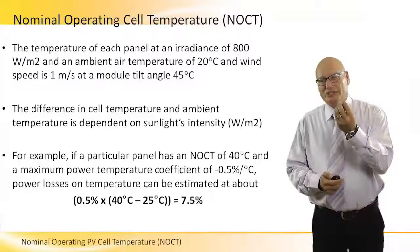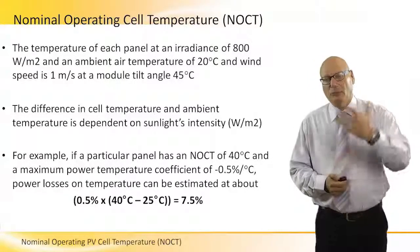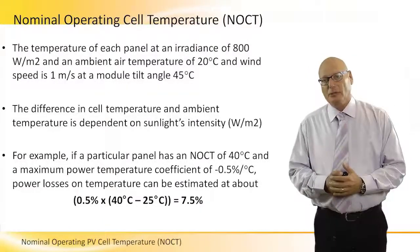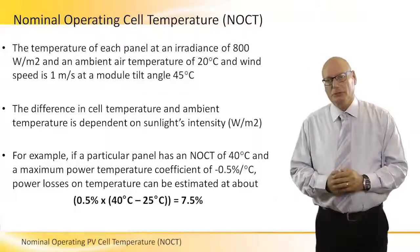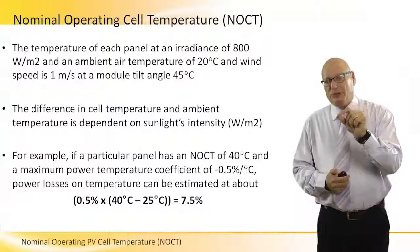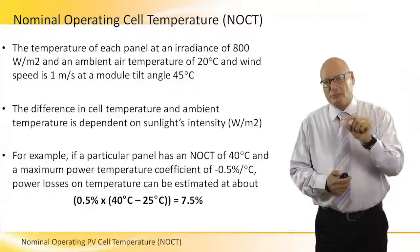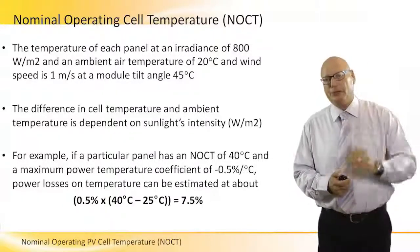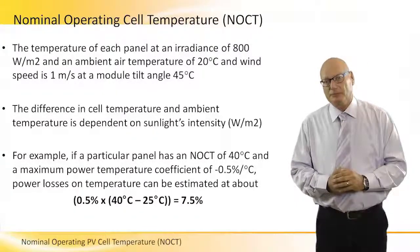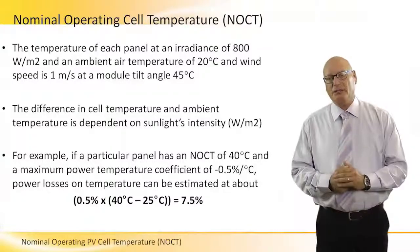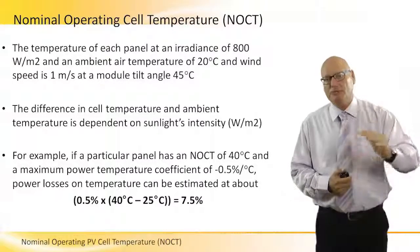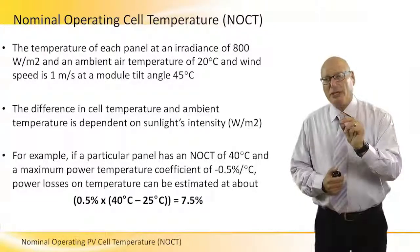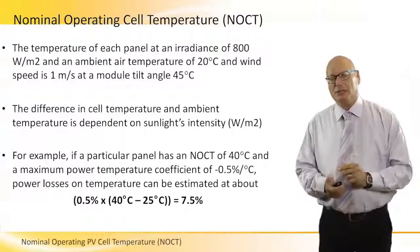So when we select a panel and look at its technical specification, we want to look at the NOCT. First, we want as small a number as possible. 0.5% per degree C above 25°C is a very big number. 0.4% is better, and 0.3% is even better. We have to be careful because the loss is significant.